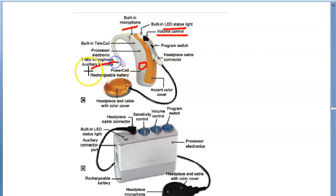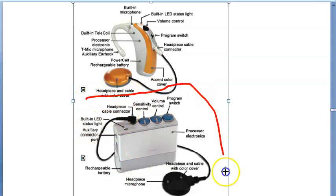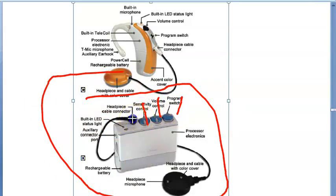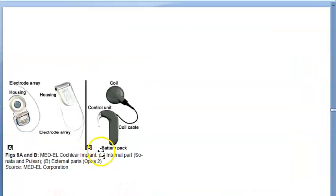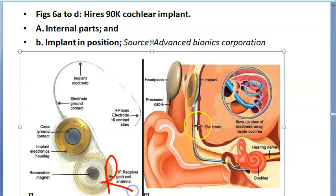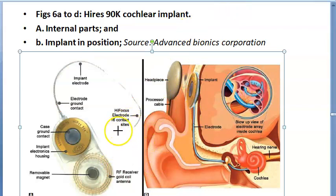There is an auxiliary ear hook, an electronic processor, built-in telecoil, headpiece and cable with a colored cover. The body-worn model has volume control, programs, sensitivity control, built-in LED, rechargeable battery, and headpiece. For the internal parts: there is a receiver, and the sound processor with microphone inside. There is a conducting element to send information to the cochlear implant, and the electrode has 16 contact sites.